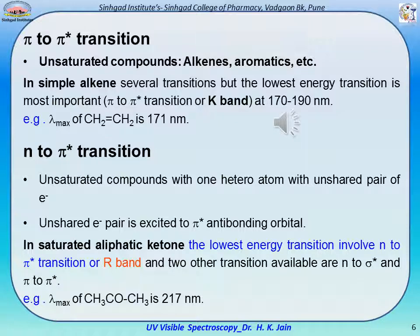Pi→pi* transition belongs to unsaturated compounds such as alkenes and aromatics. In simple alkenes, several transitions may occur, but the lowest energy transition — pi→pi* (K band) — is most important, occurring at 170–190 nm. For example, the λmax of ethylene is 171 nm.